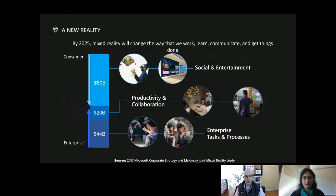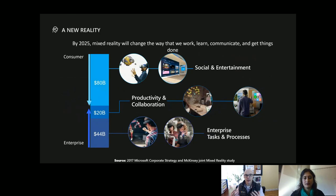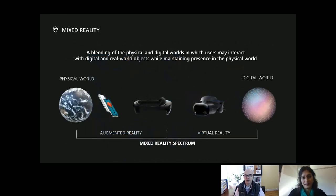You can think of mixed reality as a spectrum. On one side you have the physical world, and the digital world on the other. Everywhere in between is mixed reality. ARKit and ARCore on your mobile device are part of augmented reality. HoloLens 1 and 2 are mixed reality devices. Virtual reality is more on the digital side because you're digitally immersed into the space. There's information about all of the resources around us — whether you're in an engine room or performing maintenance — and that's really where Microsoft mixed reality with Dynamics 365 comes in.